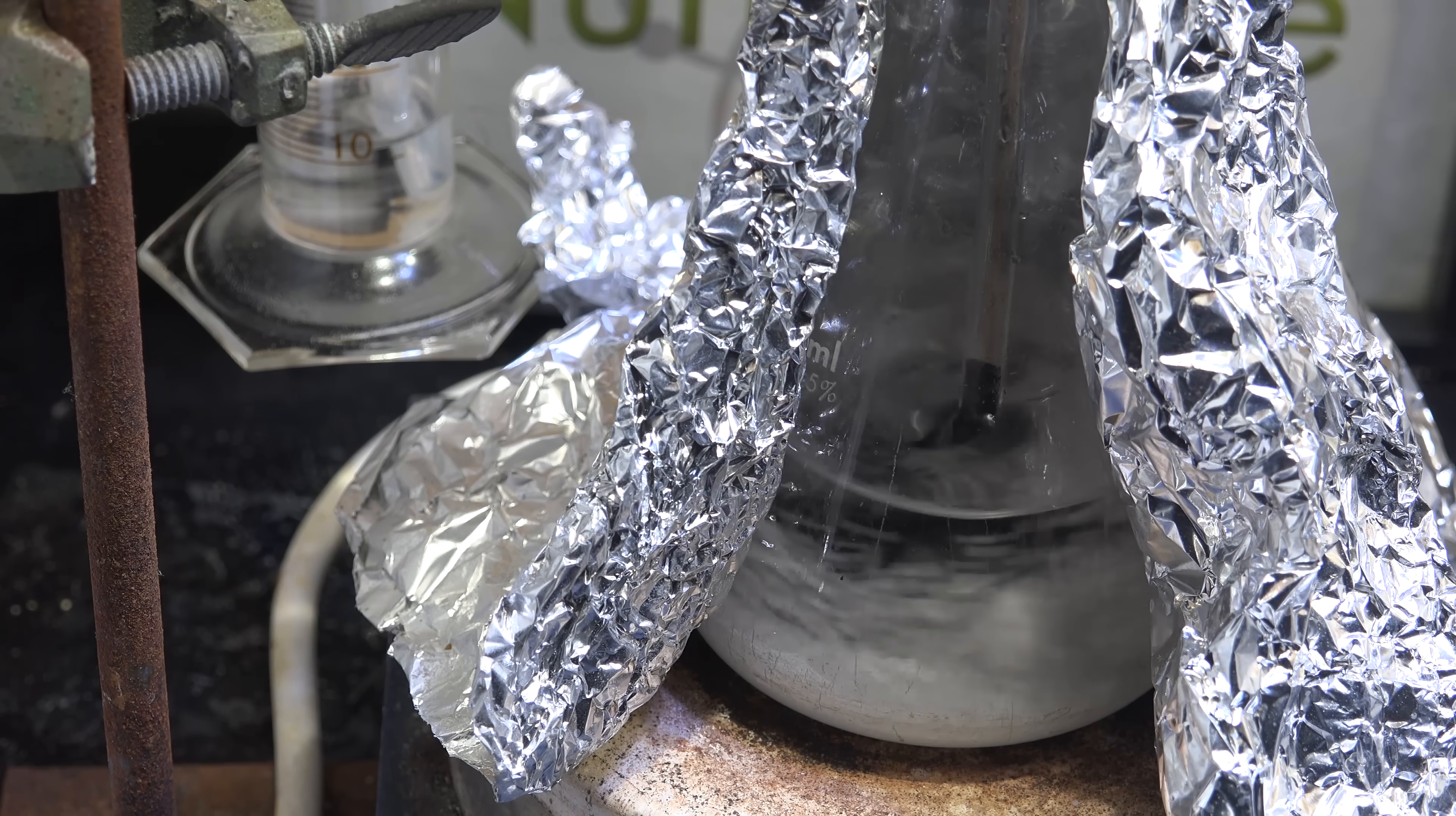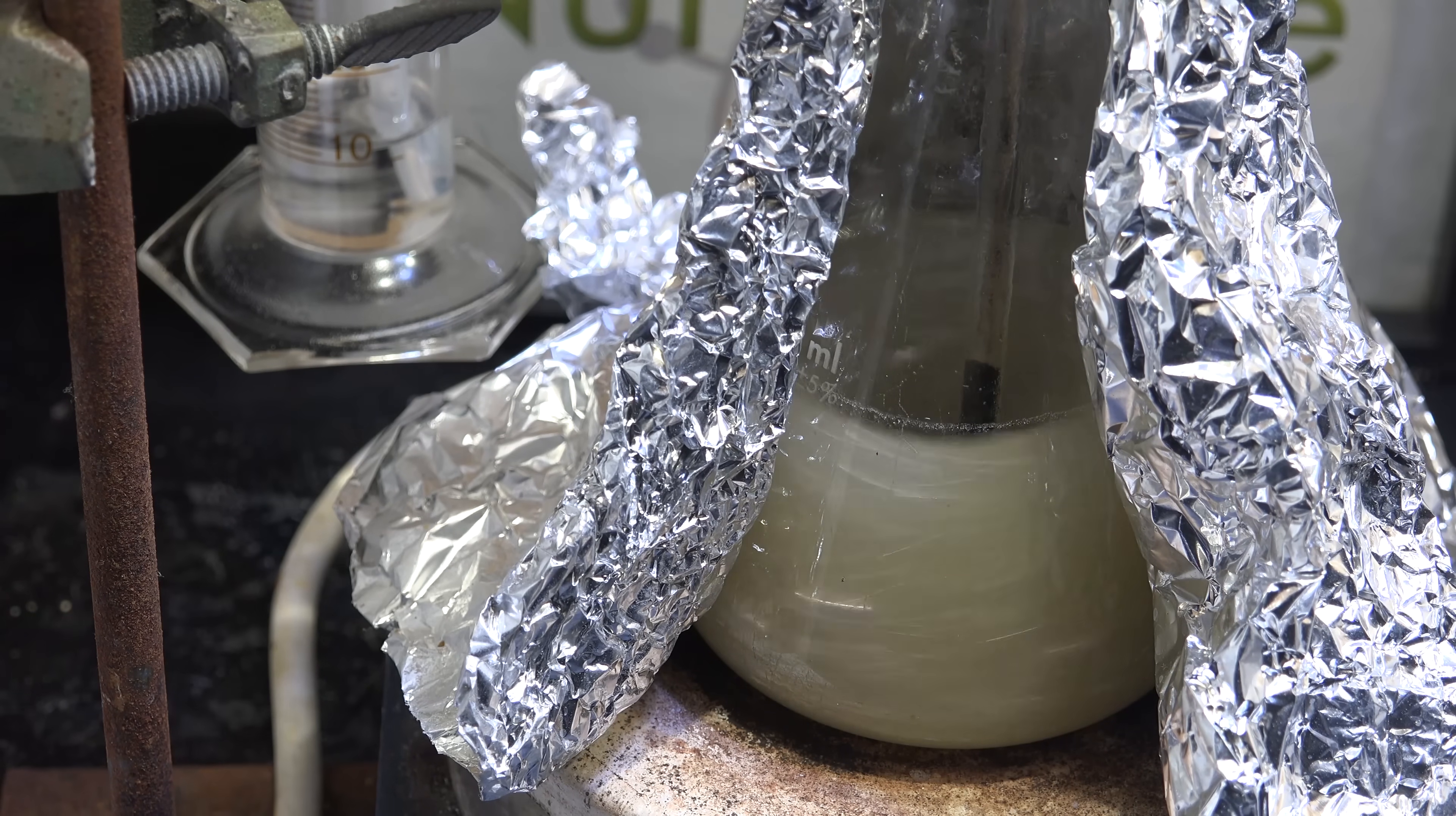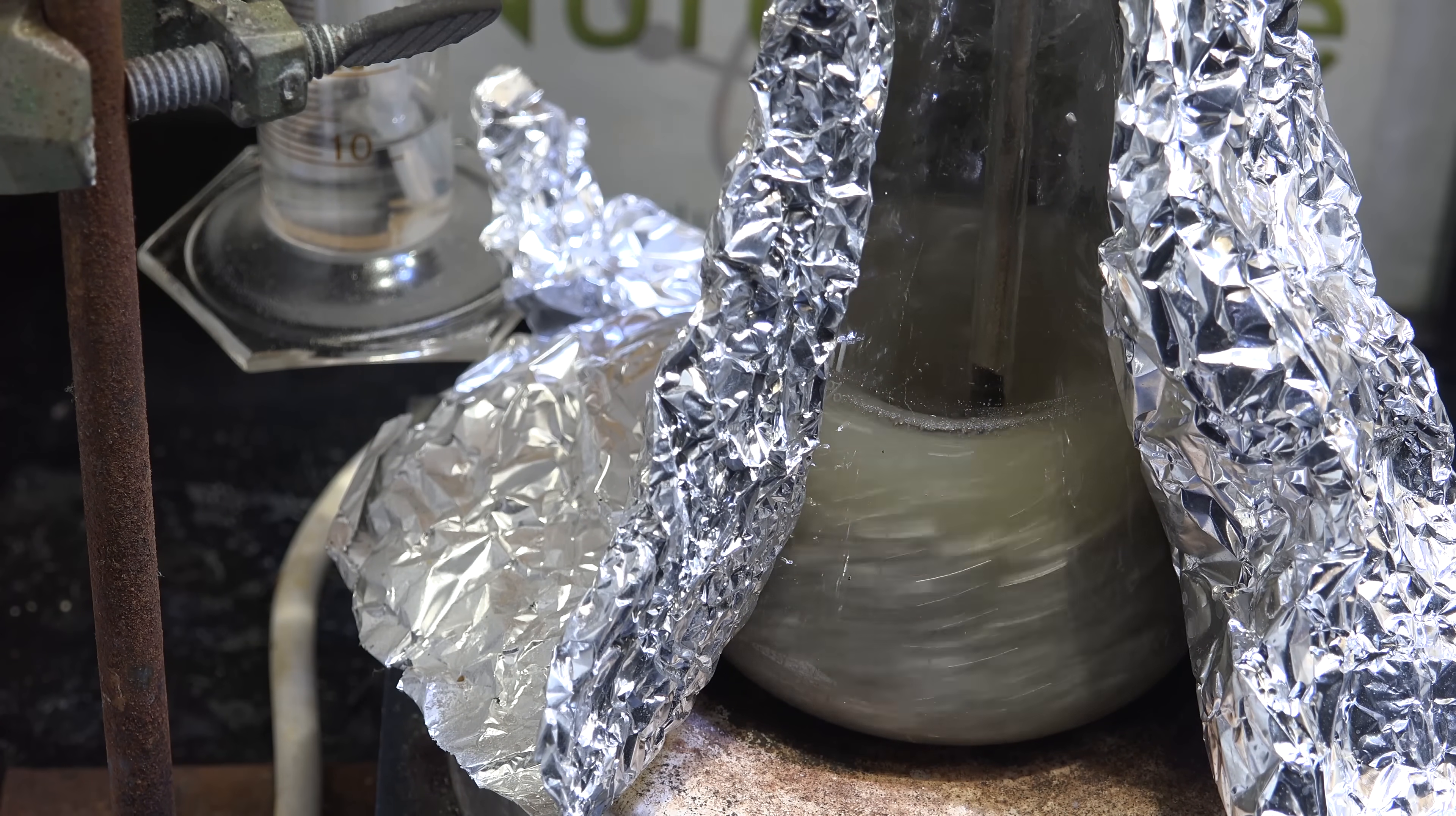First we do the drying step as usual with tea tree oil, heat to 125 Celsius until the bubbling stops. Then we add in magnesium metal and heat to 200 Celsius and it looks like it's working.